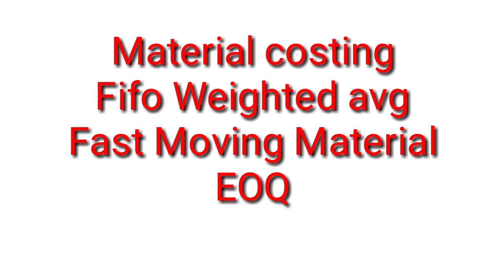Next is Economic Order Quantity (EOQ) — 100% it will come in your paper and can carry 10 marks. The formula is very important: EOQ = √(2 × A × O ÷ C), where A is annual consumption, O is ordering cost, and C is carrying cost and storage cost. You need to focus on this. Various cost names are given like holding cost, ordering cost, and inspection cost.